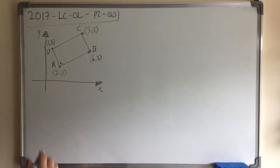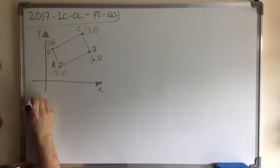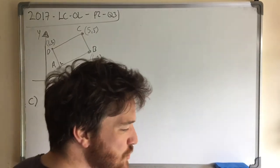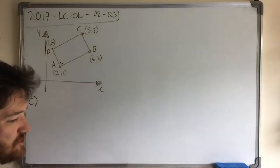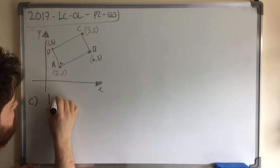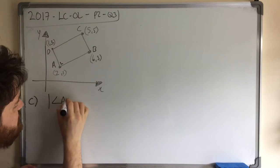Okay, we're taking a look at 2017 Leaving Cert Ordinary Level, Paper 2, Question 3, Part C. So they say use trigonometry to find the measure of the angle ABD. So I'm just going to write that in notation, ABD.